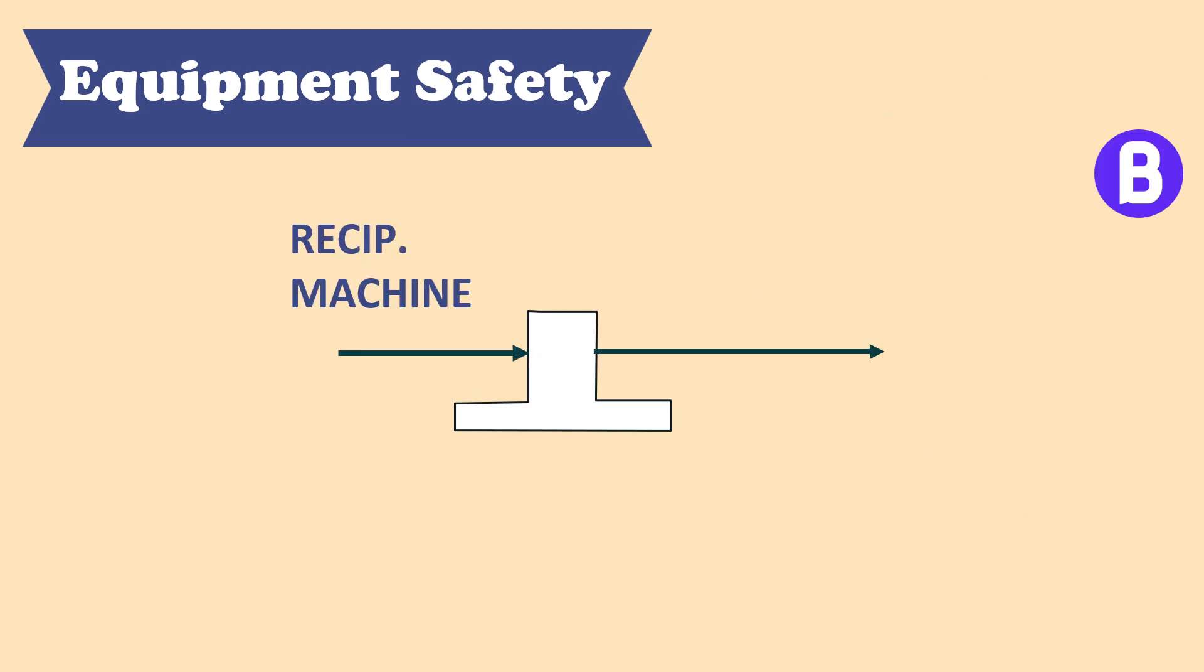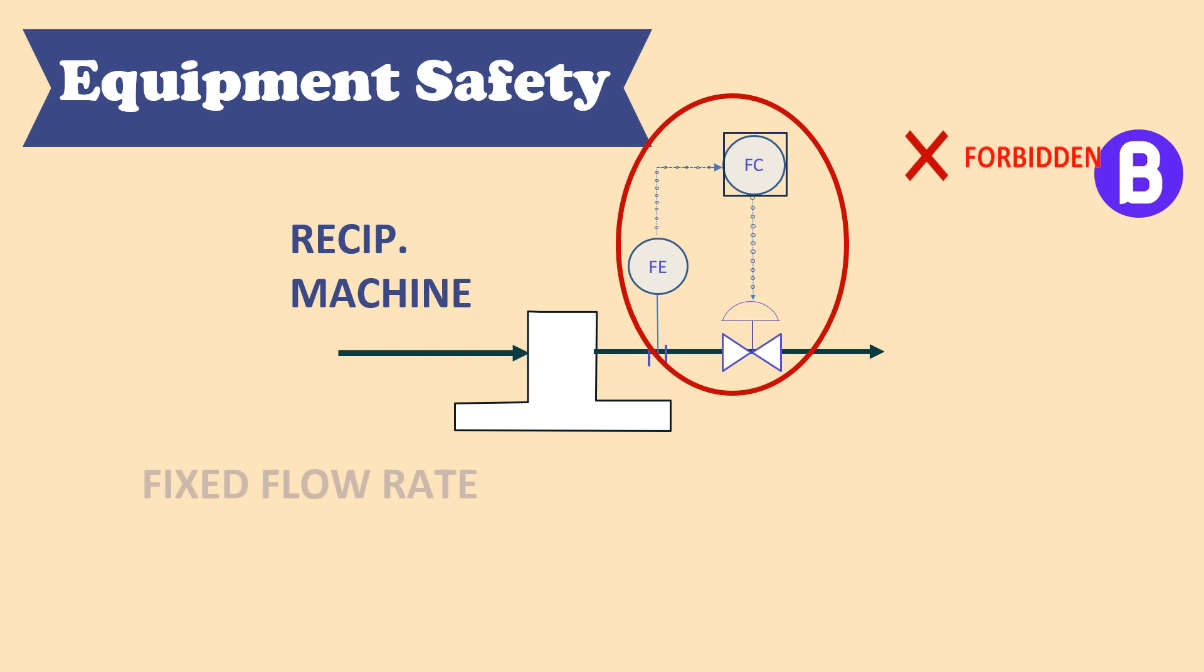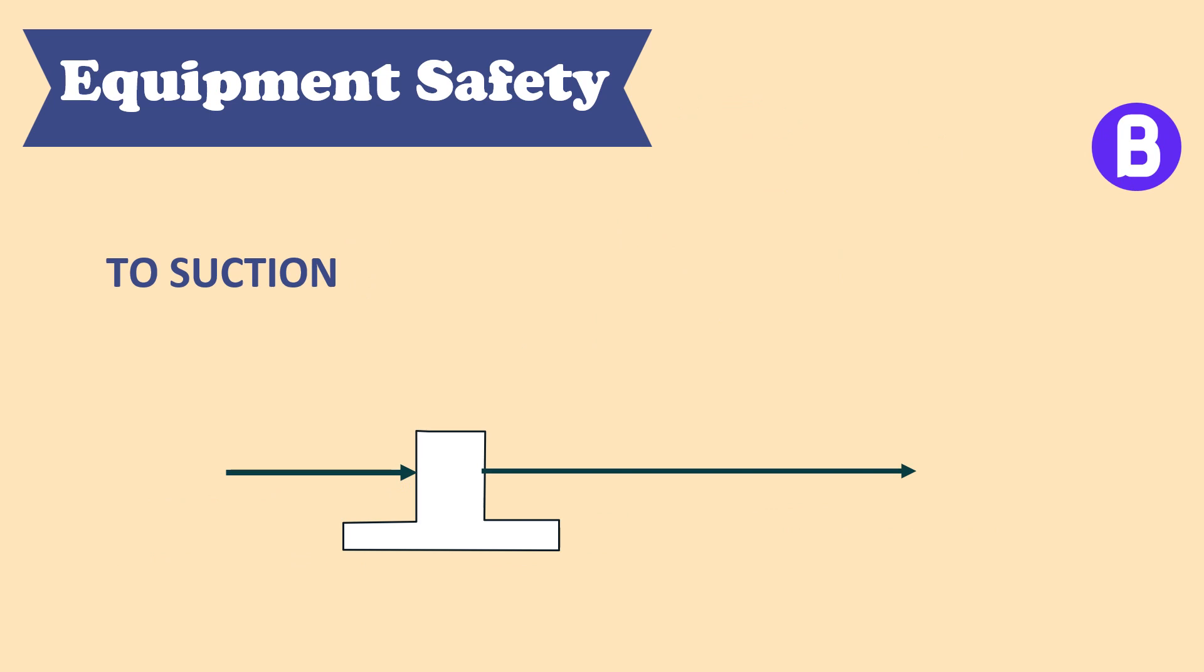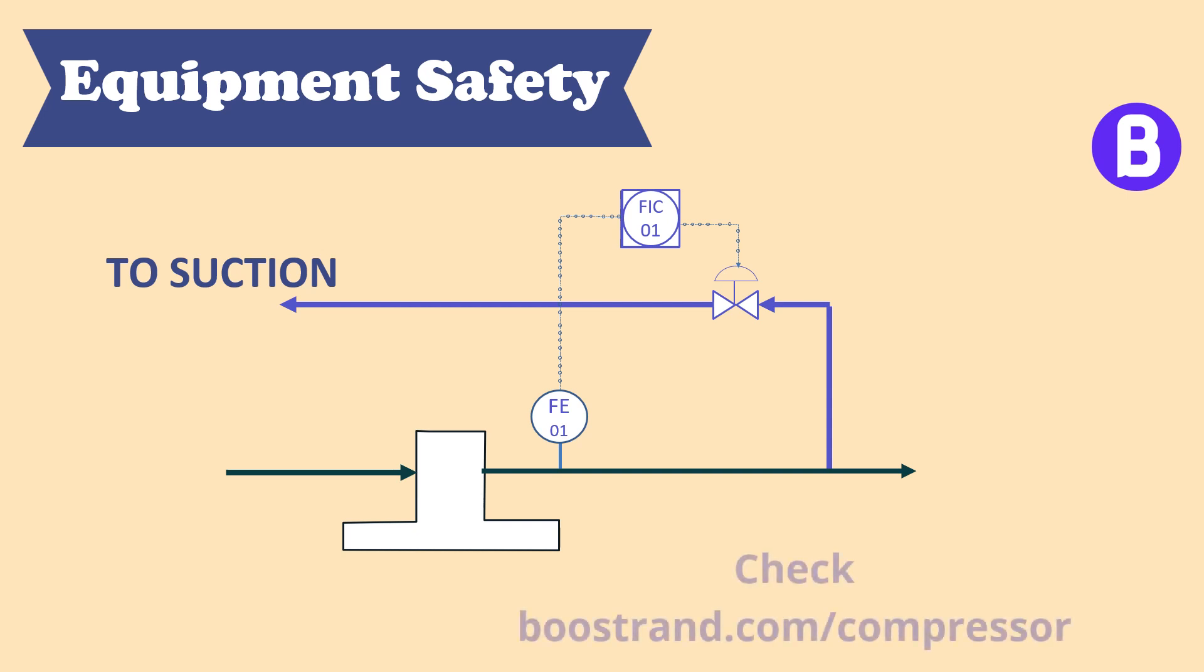If we are using a reciprocating pump or a compressor, placing a control valve on the suction or the discharge line would be a great safety issue. As the reciprocating pump or compressor give a constant flow, throttling the discharge line would mean increasing the pressure drastically. That's why in this case we control the capacity of the reciprocating machines through recycling or spillback lines, where the residual flow is recycled or sent to a safe location. You can check out the compressor operation course for more information.